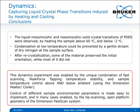Conclusions. The liquid mesomorphic and mesomorphic solid crystal transitions of PDES were observed by heating the sample above 60 degrees C and cooling below minus 2 degrees C. Condensation at low temperature could be prevented by a gentle stream of dry nitrogen directed at the sample surface. After recrystallization, some of the material preserved the initial orientation while most of it did not. This dynamics experiment was enabled by the unique combination of fast scanning, Peak Force Tapping, temperature stability, and sample temperature control above and below ambient using the Dimension Heater Cooler. Control of different sample environmental parameters is made easy to implement and in many cases enabled by the tip-scanning open platform geometry of the Dimension FastScan system.